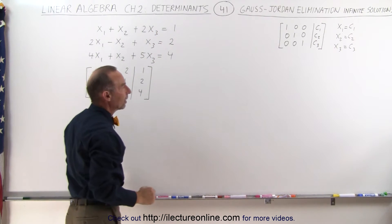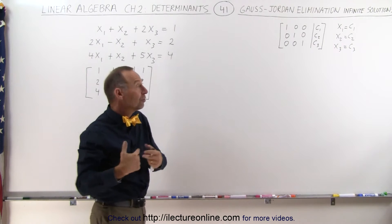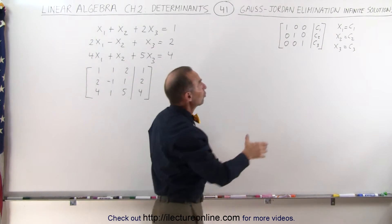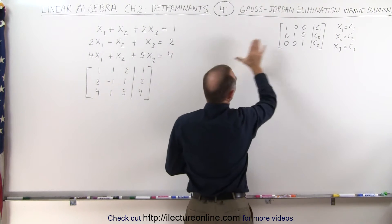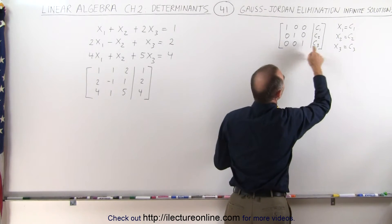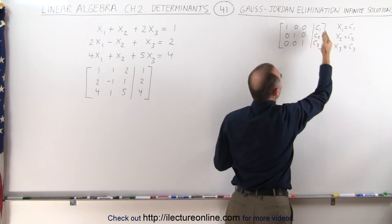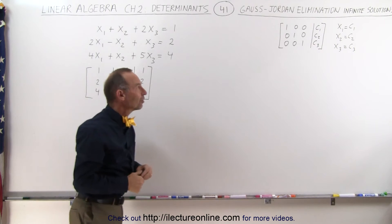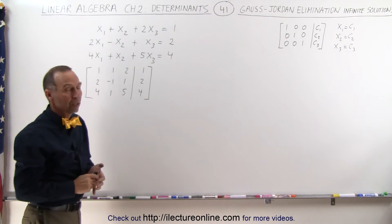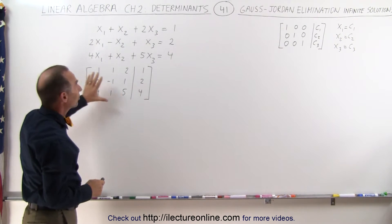And if there's indeed a unique solution, we should be able to make this matrix look like this, where we can see that x1, x2, and x3 have specific values that make it unique. So what we're going to do is try to make this look like that.